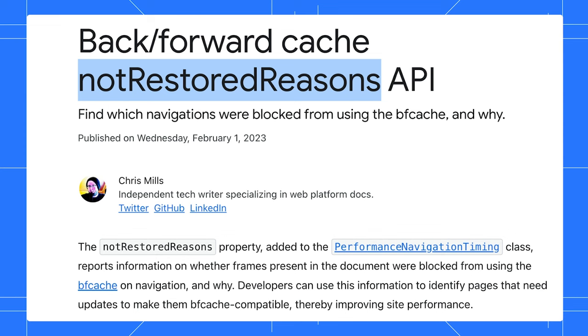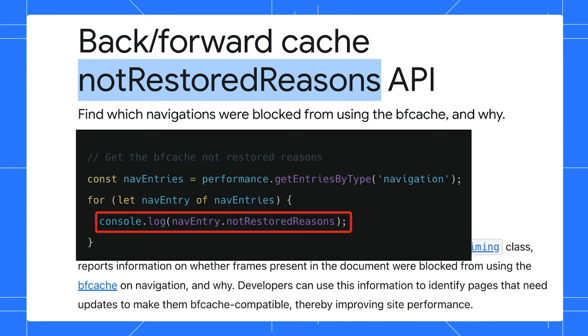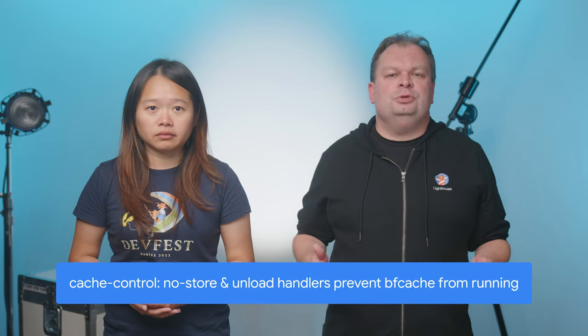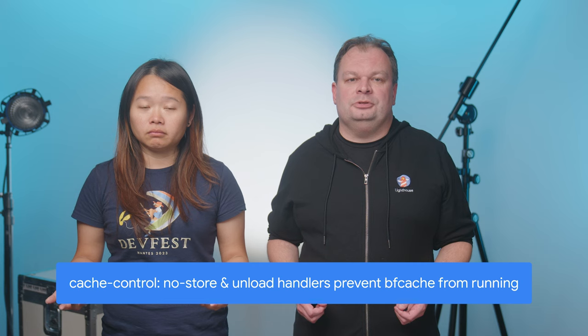As well as these lab tools, we have a Not Restored Reasons API, which allows you to collect all the reasons for all your pages in the field from actual users. The two main reasons are pages using cache-control no-store, or unload handlers. The Chrome team are looking at both to see if they really should prevent BF cache usage in future. But in the meantime, sites can fix this themselves.